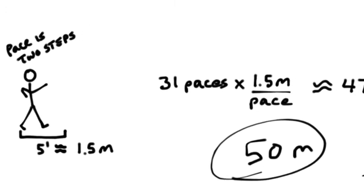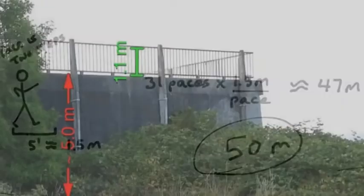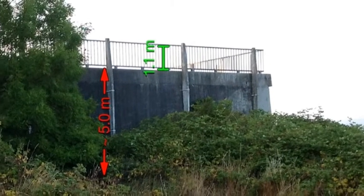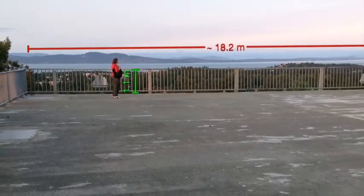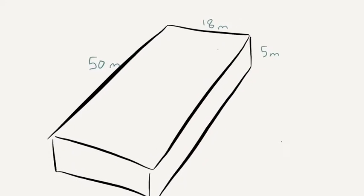The railing is 1.1 meters tall, so the structure is about 5 meters tall. Again, the railing is 1.1 meters tall, so it's about 18.2 meters wide. Remember, this is an estimate.